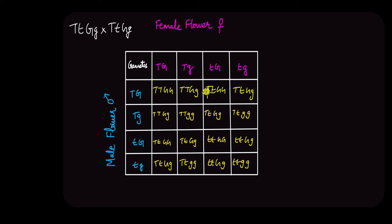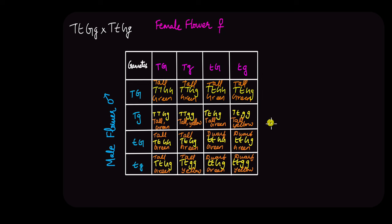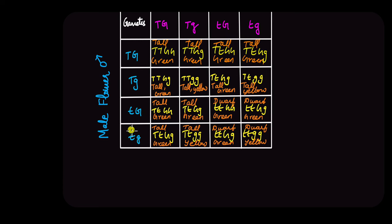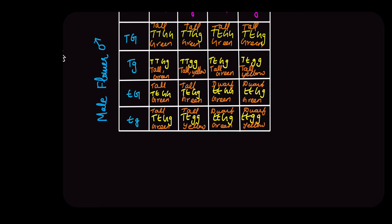And the rest of the Punnett square would look something like this when it is filled fully. Take a moment, pause the video if you want to remember the different types of combinations possible in the offspring. If we were to write the phenotypes of each of this genotype here, this would be tall green, tall green again, same tall green and tall green. Similarly, if we were to fill the phenotypes for rest of the Punnett square, this is what it would look like. You can pause the video here to fully understand the phenotypes of all the possible offsprings.